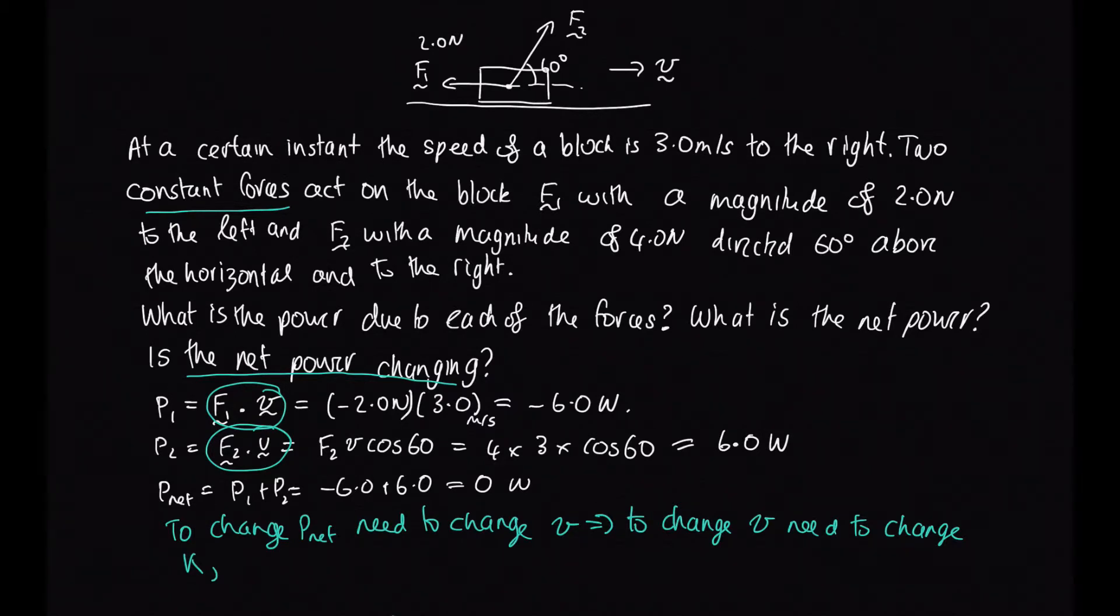To change K, then we need to do work. We know that we need to do net work on the block. But if we are to transfer energy to the block, then the power needs to be positive, or negative we'll be transferring energy away from the block.